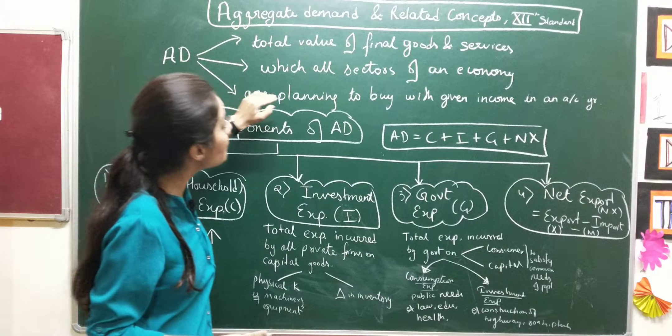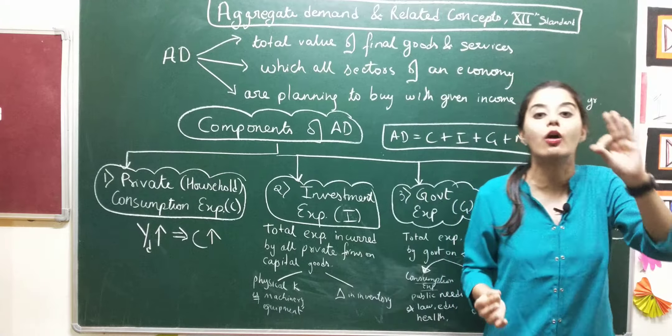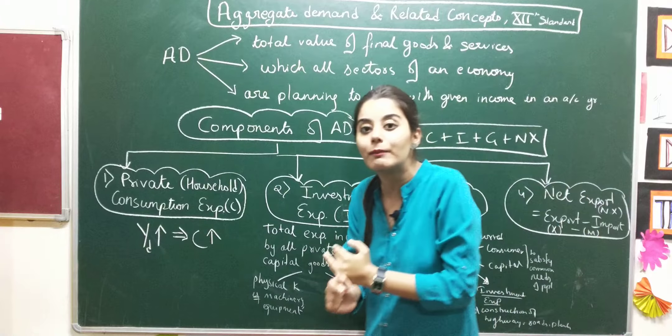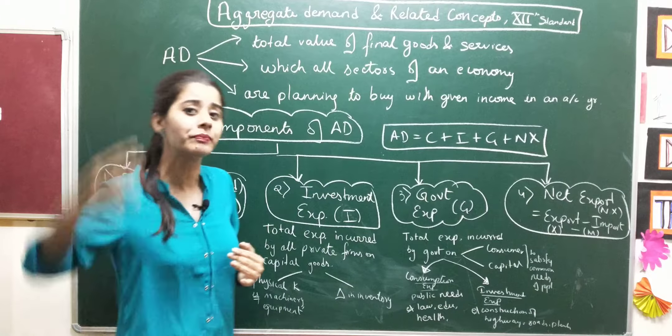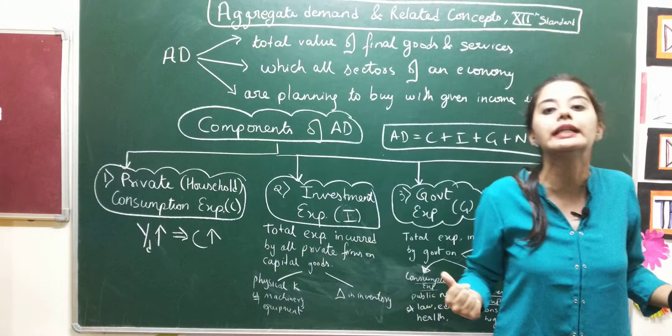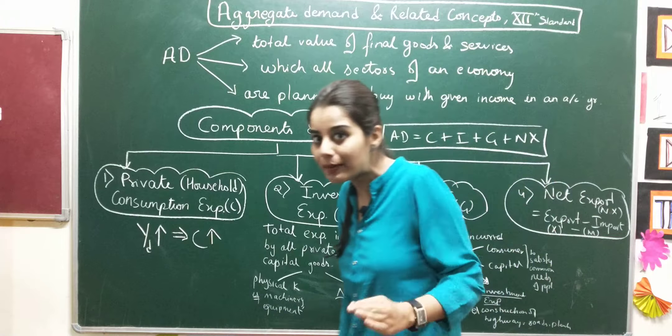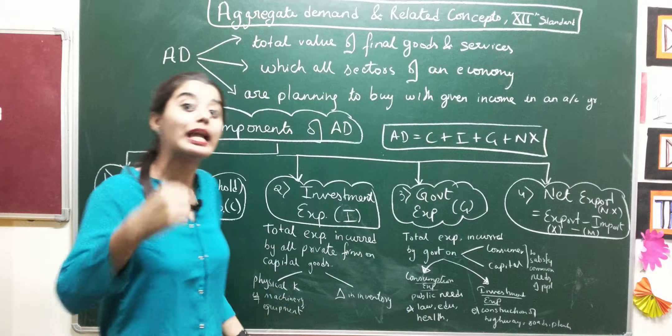Moreover, they are planning to buy with the given income in an accounting year. Meaning, in one year, how many goods and services are demanded by the three sectors. And everyone, according to their pocket - meaning everyone according to their income, they plan out their buying in an accounting year.